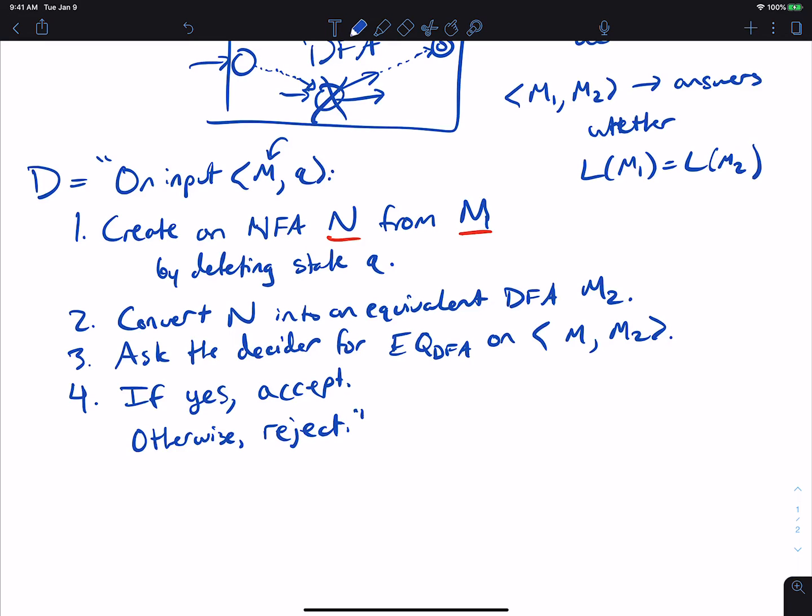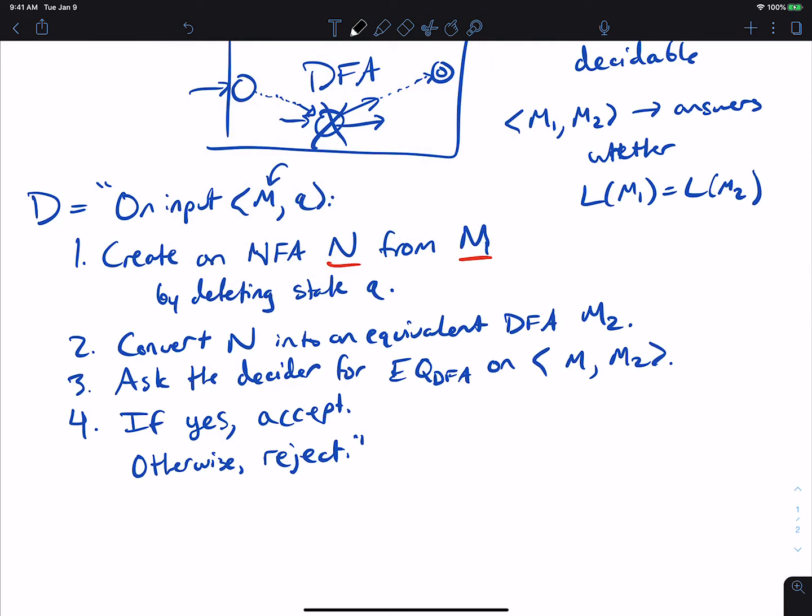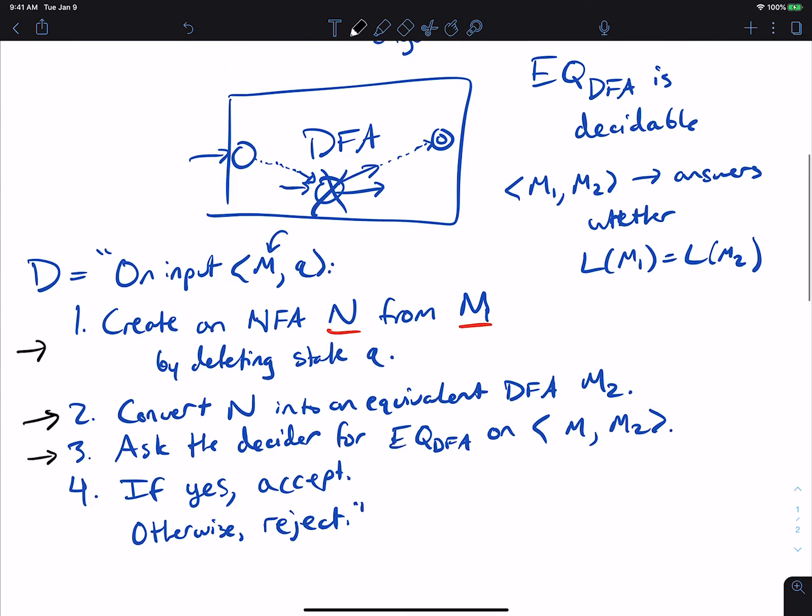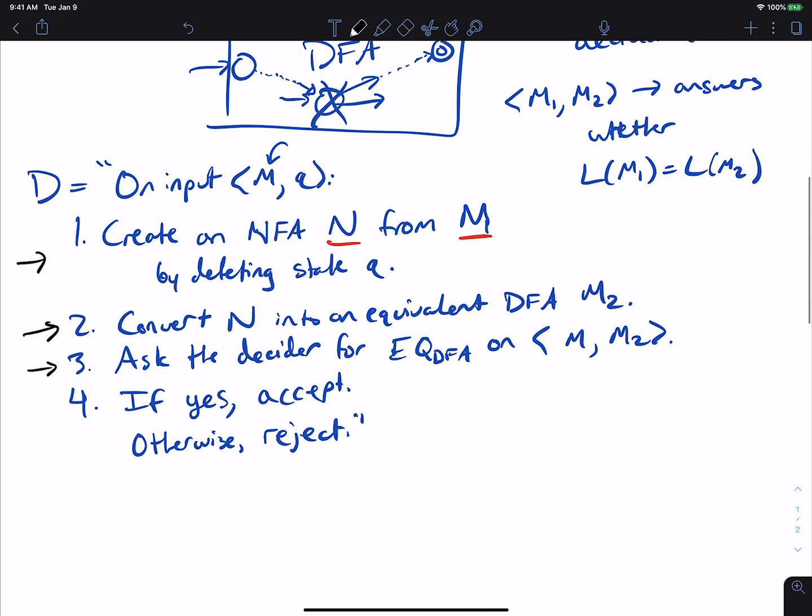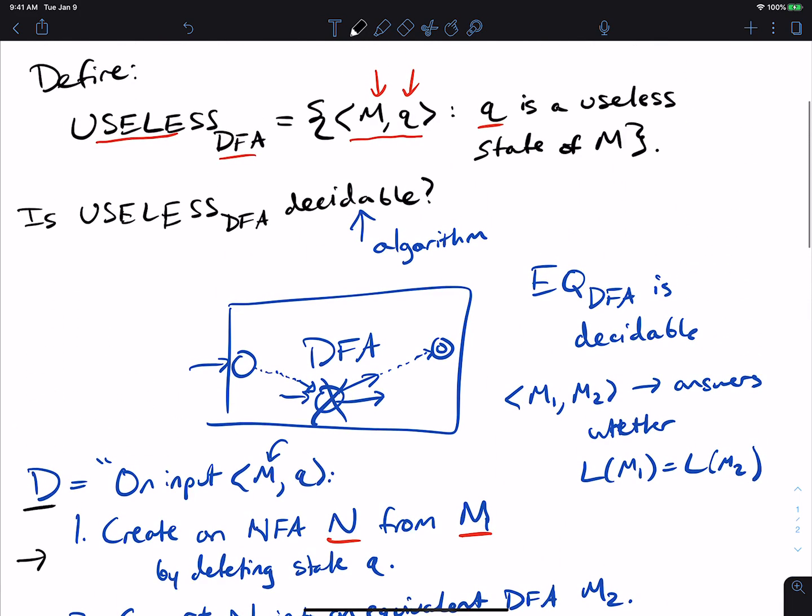That is a decider because we got to check: is every step done in a finite amount of time? Step one is because we can just go through the description of the machine and eliminate every occurrence of state q. That's pretty easy. Step two: there's an algorithm for converting an NFA into a DFA, which we've had videos on before. I assume that EQ_DFA is decidable and it is, and I will be covering it in a future video. Based on the assumption that it is decidable, the fourth step is definitely decidable because it's just one step. Therefore we say that D is a decider for this language, USELESS_DFA. And so therefore USELESS_DFA is decidable.